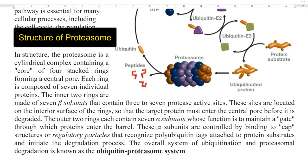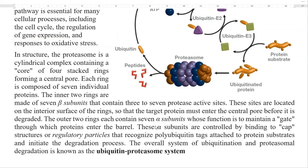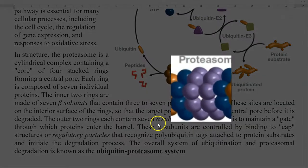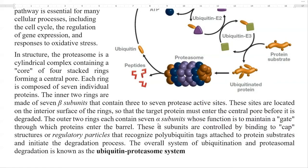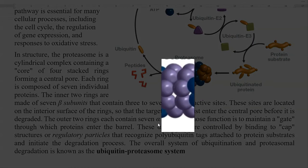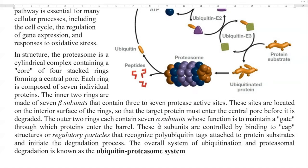Now we look into the structure of the proteasome molecule. It is a cylindrical complex containing a core of four stacked rings forming a central pore, shown in the right-hand side diagram as dark blue and light blue color rings. Each ring is composed of 7 individual proteins. The inner two rings are made up of 7 beta subunits, shown in light blue, and they contain 3 to 7 protease active sites involved in damaged protein degradation.